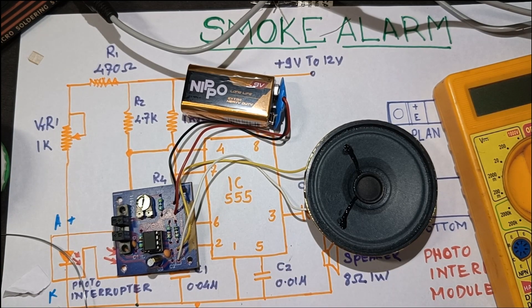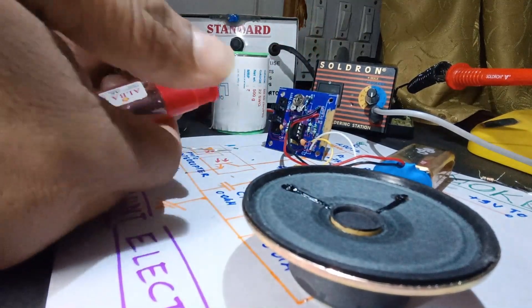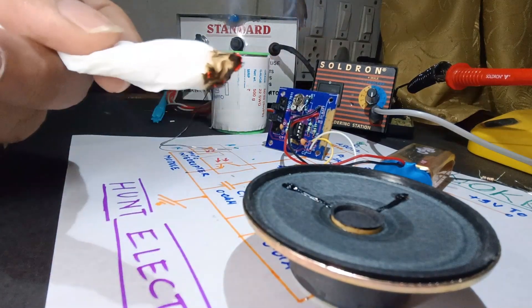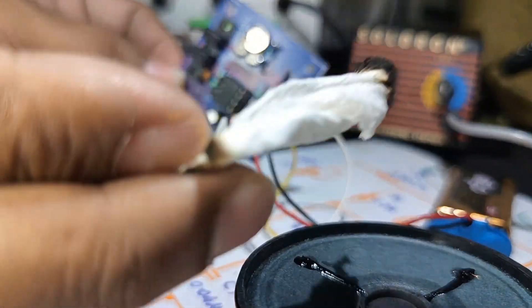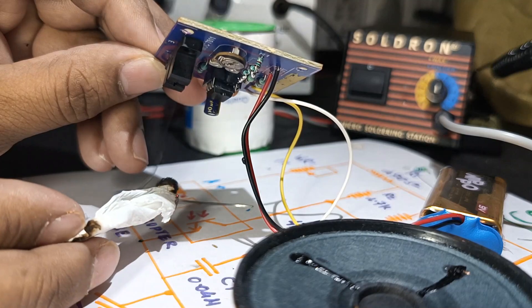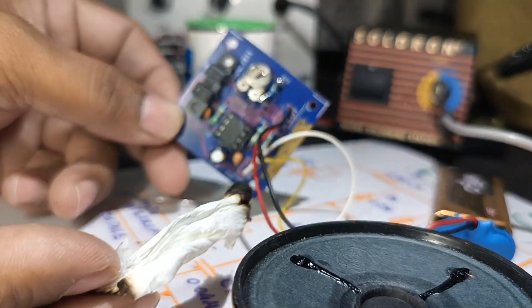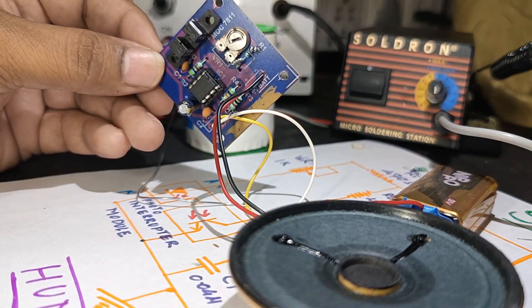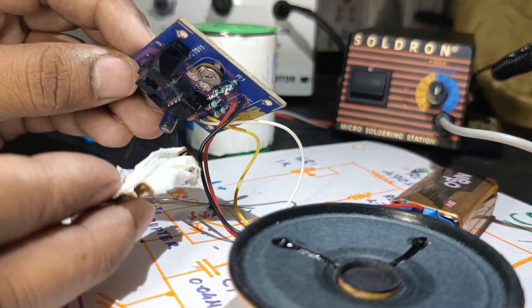Now let us create smoke and let us check whether it can detect smoke or not. We are going to create smoke with the help of lighter. My dear friend, you can see the smoke here. As smoke gets louder, the output noise will be also louder. Thank you.